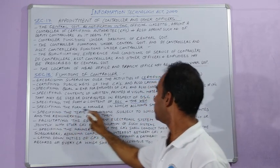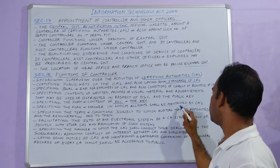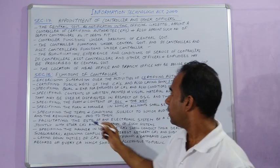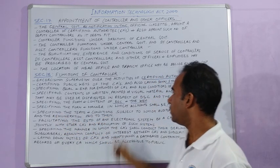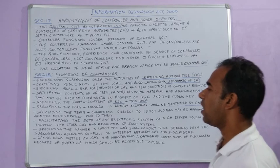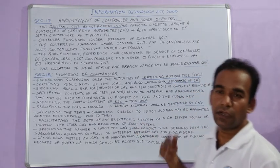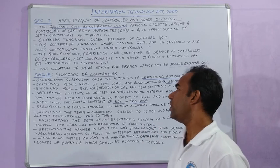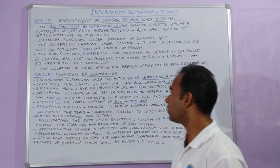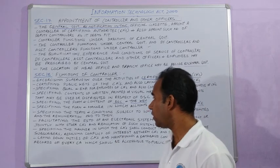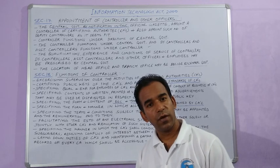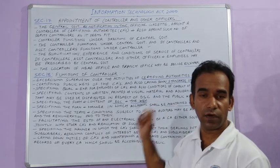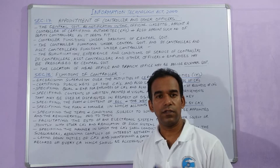The controller specifies the manner in which accounts shall be maintained by the certifying authorities. Also, the terms and conditions subject to which auditors may be appointed and the remuneration paid to them — so if auditors are appointed for auditing, the controller appoints them and decides their terms of service and remuneration.